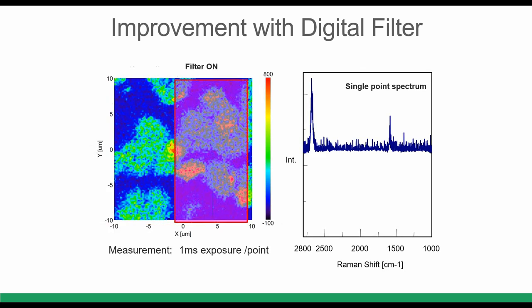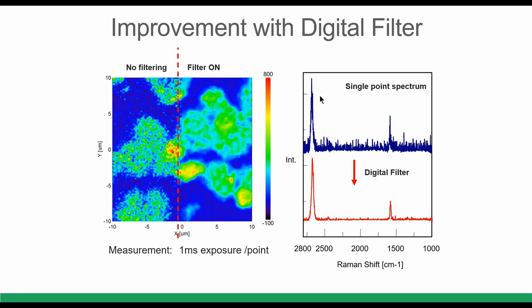This is an example showing the effect of the digital filter. We have the signal, the digital filter is applied, and we get a better spectrum. As a consequence, we can have a better image — that is the final goal, to reproduce a clean Raman image. The only way to achieve this is with a very clean spectrum. For mapping a large area quickly, challenges are overcome using EMCCD detectors, a high-speed stage, and software data processing such as the digital filter.